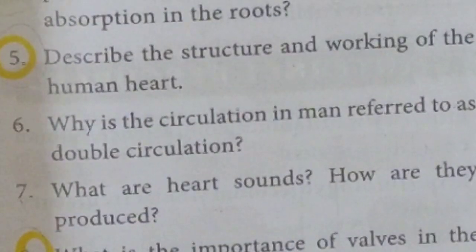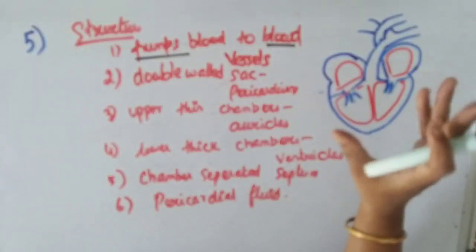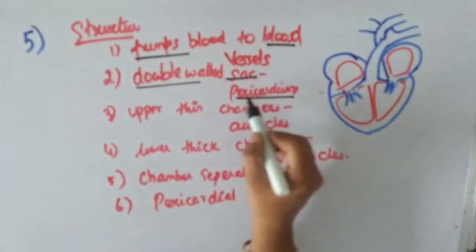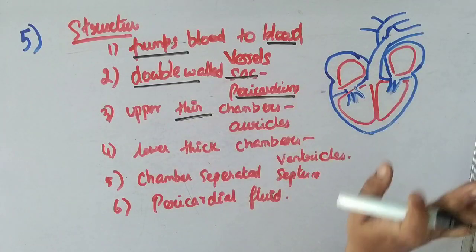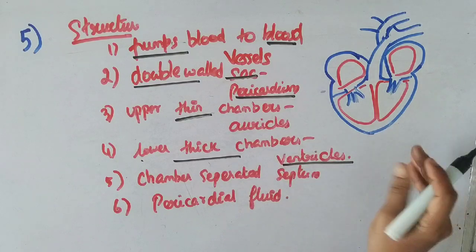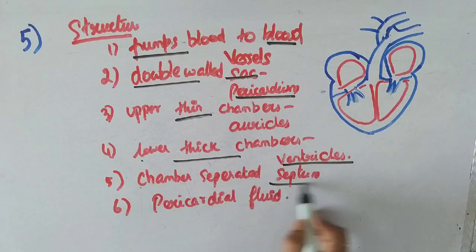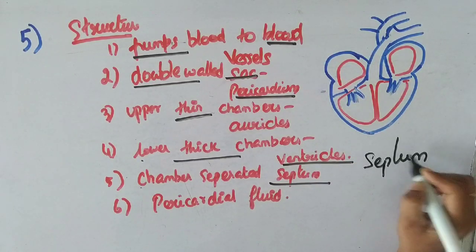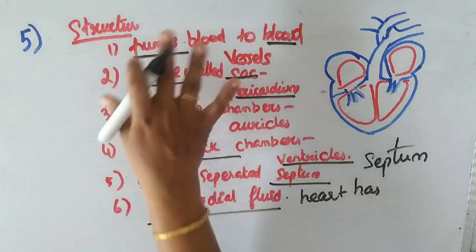Question 5: Describe the structure and working of the human heart. The function of the heart is to pump blood to the blood vessels. The heart is a double-walled sac, the main organ. There is a double-walled sac called the pericardium. There are thin chambers called auricles and thick chambers called ventricles. The chambers are divided by the septum. Inside the heart there is a fluid called pericardial fluid.